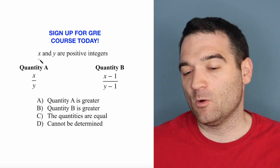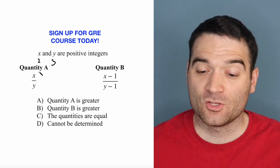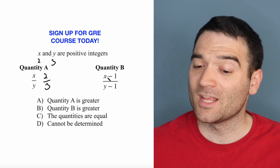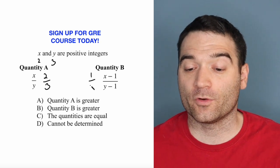I don't know. How about 2 and 3? Those are positive integers. So in that case, x over y is 2 over 3. X minus 1 over y minus 1 would be 1 over 2.